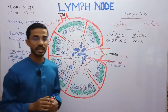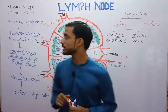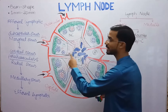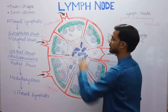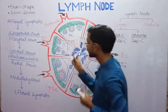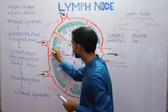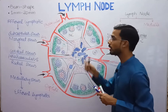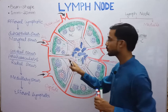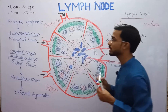Now we will see how lymph flows in the lymph node. First of all, lymph enters the lymph node through the afferent lymphatic vessels, and it opens into the subcapsular sinus, or marginal sinus, because it is below the capsule region.